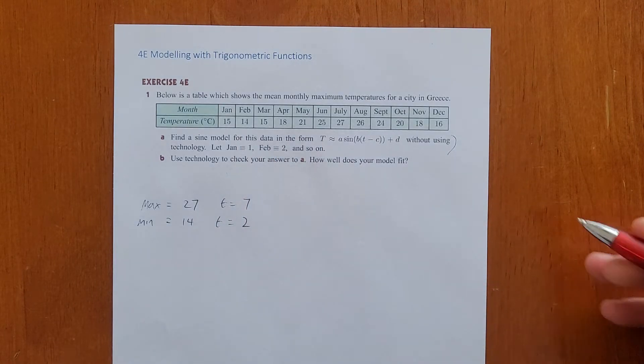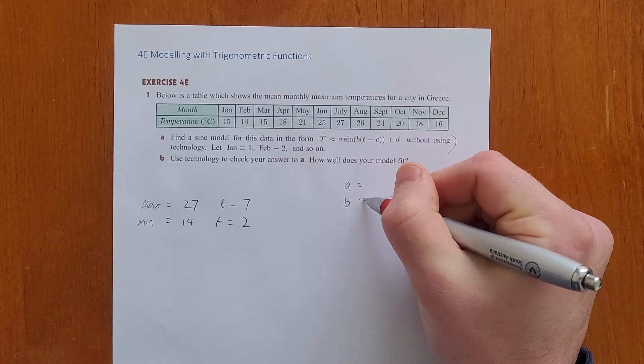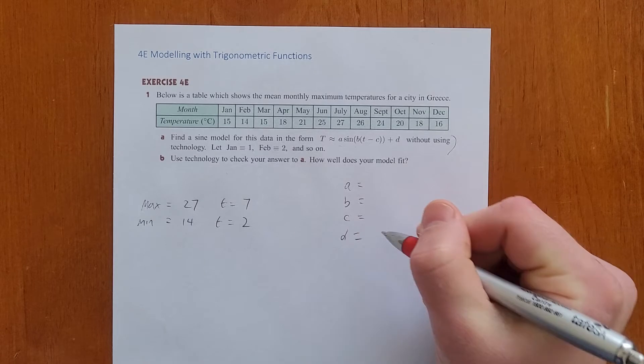Using all this information, we need to find a sine wave. We need to find the amplitude, the value of B, which affects the period, the horizontal translation, and the vertical translation.